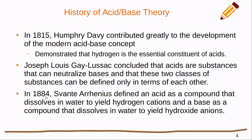Then in 1884, we start to really make some headway with this — Arrhenius defined an acid as a compound that dissolves in water to yield hydrogen cations, and a base as a compound that dissolves in water to yield hydroxide anions. So this is the typical acid-base theory we've been dealing with so far: acids give us hydrogen cations, and bases give us some sort of hydroxide.